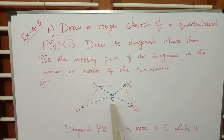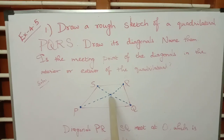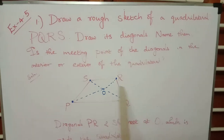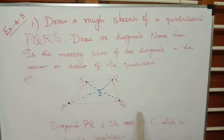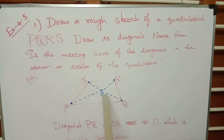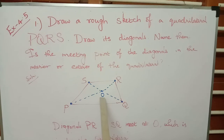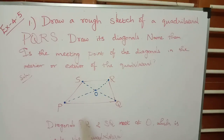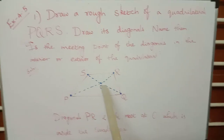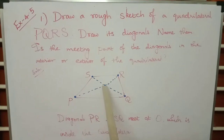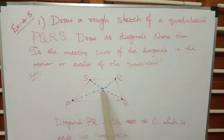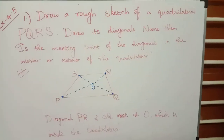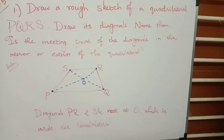This common point O lies in the interior — interior means inside — it lies inside this quadrilateral. It does not lie outside, it does not lie in the exterior. So it lies only in the interior of the quadrilateral. The diagonals PR and SQ meet at the point O, which lies in the interior of the quadrilateral. Hope you have understood this problem. Thank you.